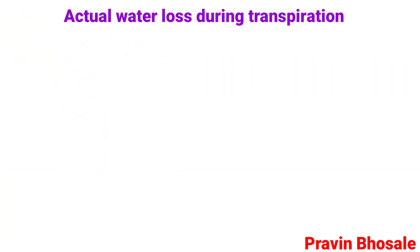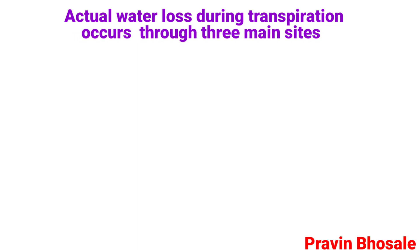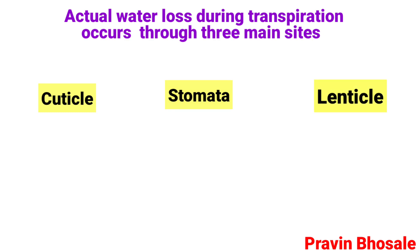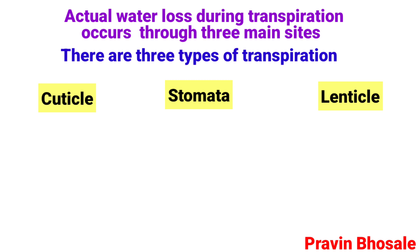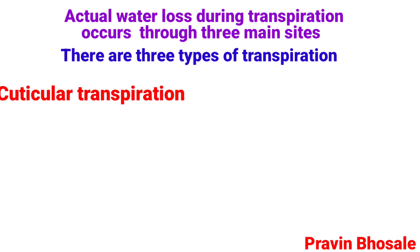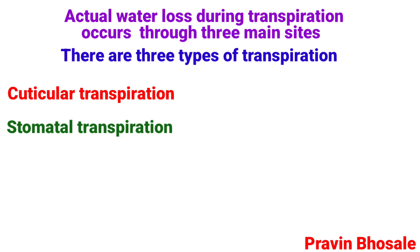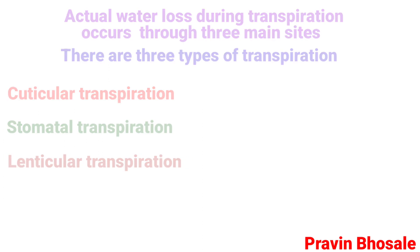The actual water lost during transpiration occurs through 3 main sites: cuticle, stomata, and lenticles. Accordingly, there are 3 types of transpiration: cuticular transpiration, stomatal transpiration, and lenticular transpiration.